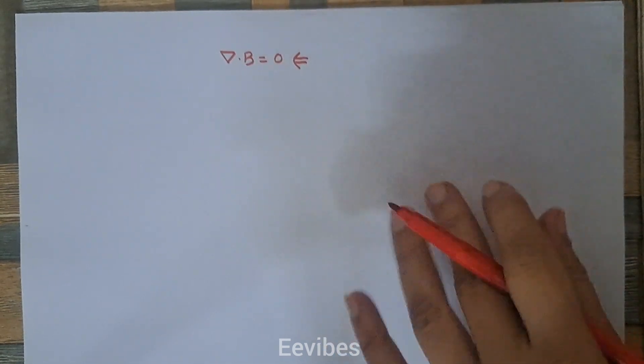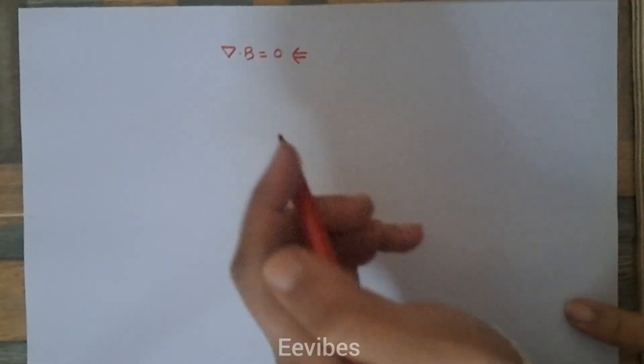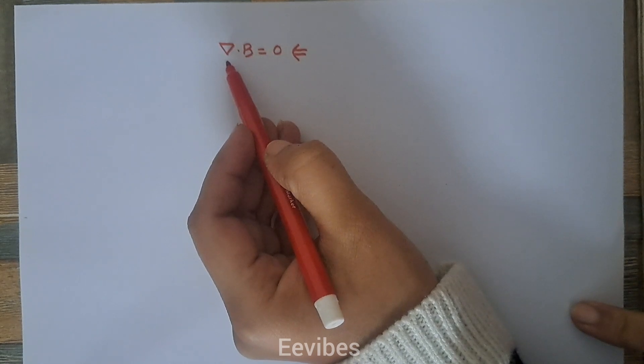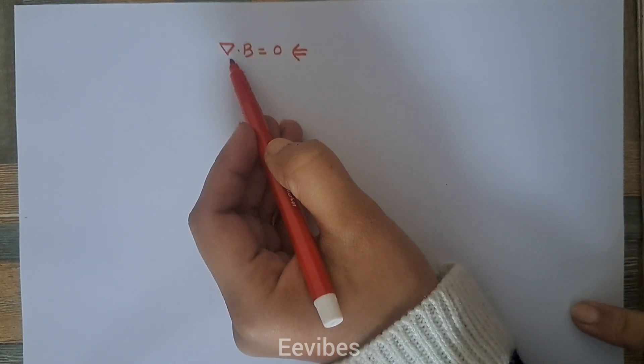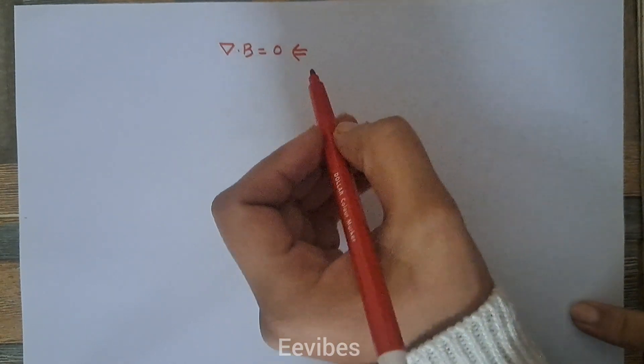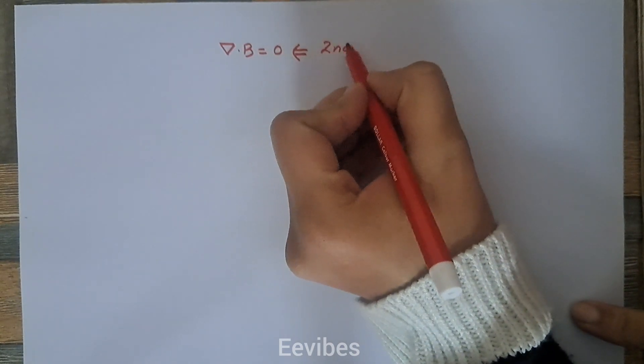Hi students, this is Asma Mishak from EEvibes. In this video I am going to explain a very well-known equation which is ∇·B = 0. This is the second Maxwell's equation.